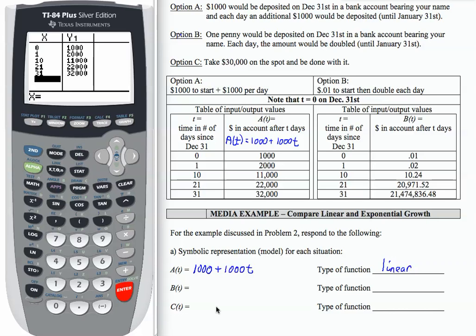I'm going to jump down to option C. Take $30,000 on the spot and be done with it, meaning for a model that no matter how much time passes, all I have is $30,000. If you remember, this is an equation of the form y equals a number, which is a horizontal line. It is still linear and it is a specific kind of linear function called a constant function because no matter what the input is, the outputs do not change.